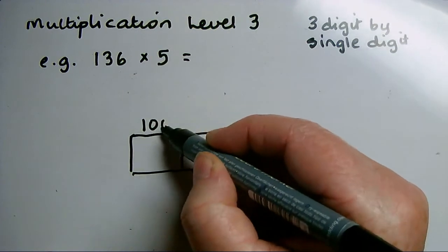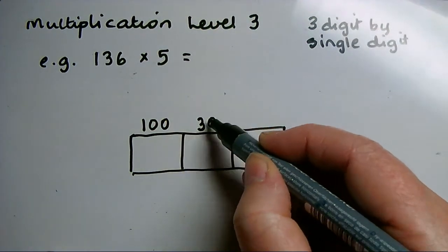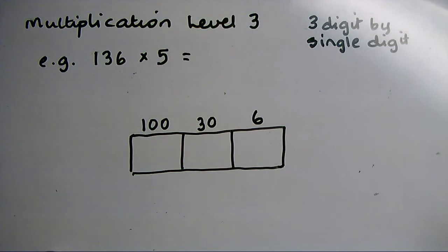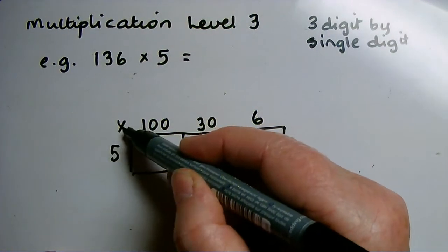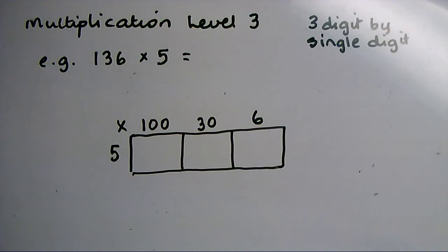I have a place for the 100, the 30 and the 6. I put the 5 at the end and I put the times sign in the top corner to remind myself this is a multiply grid.